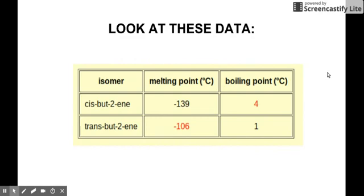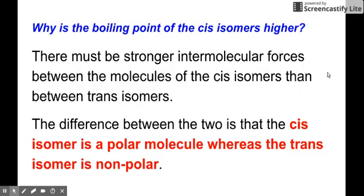How come there's a difference between the boiling and the melting point between these two compounds? For boiling point, there must be stronger intermolecular forces between the molecules of the cis isomers than between trans isomers. The difference lies between the two is that the cis isomer is a polar molecule, whereas the trans isomer is non-polar. Now, what's with polarity that will influence the boiling point of the cis and trans isomer?